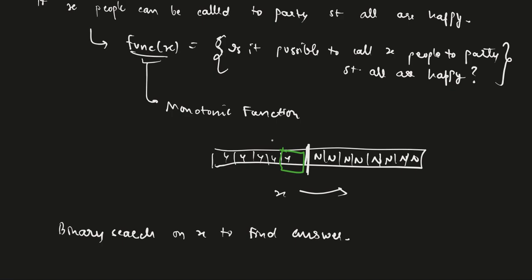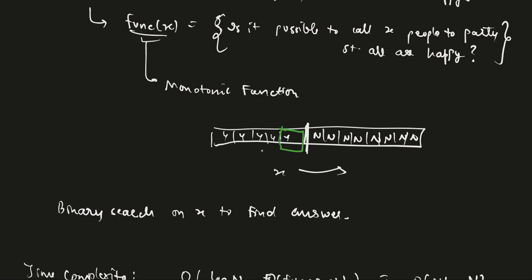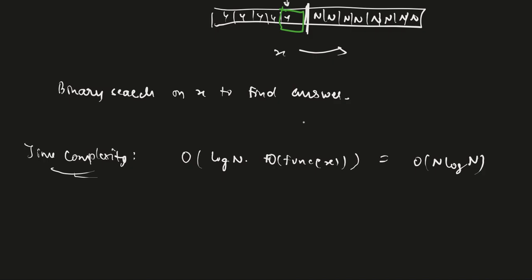Now from the definition, it is a monotonic function of the type yes, no. So initially it will be possible to call x people to the party, then it will not be possible. We need to find this index, which is the maximum x such that we can call x people to the party and all remain happy. This is a typical binary search setup.